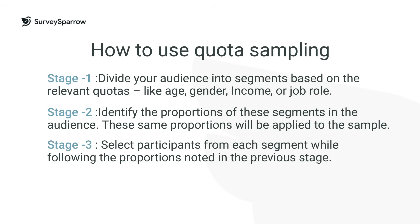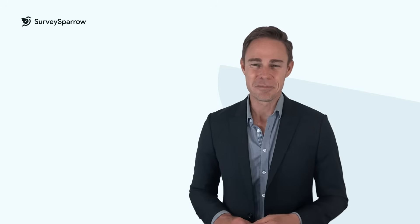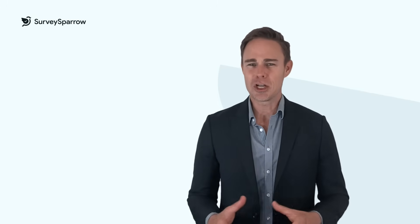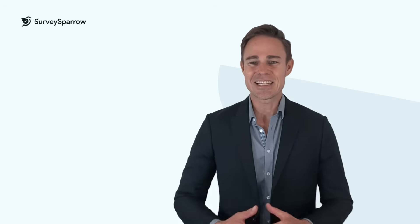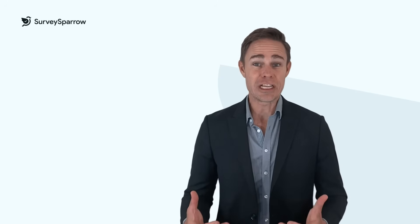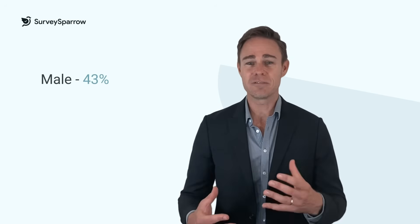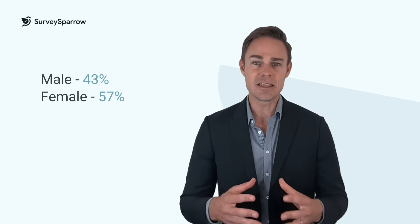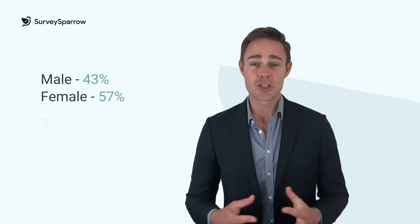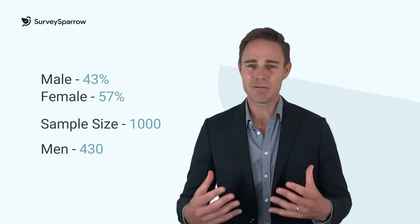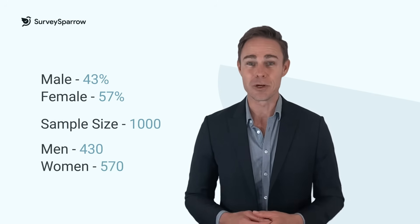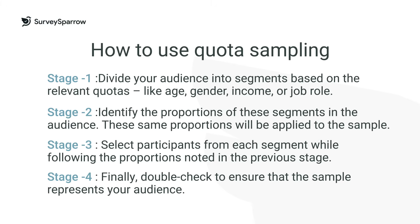For example, let's look at a local college's target audience of college students. Because the researcher can access this data, he or she knows that 43% of the students are male and 57% are female in the given population. So for a sample size of 1,000, the researcher knows that 430 men and 570 women will be required from that audience.